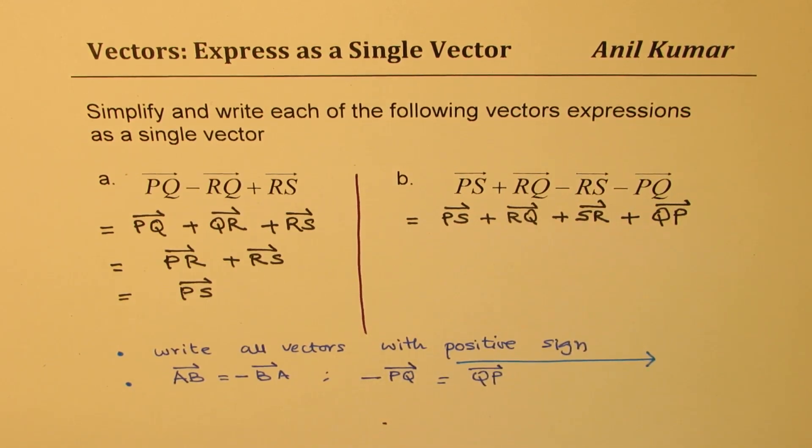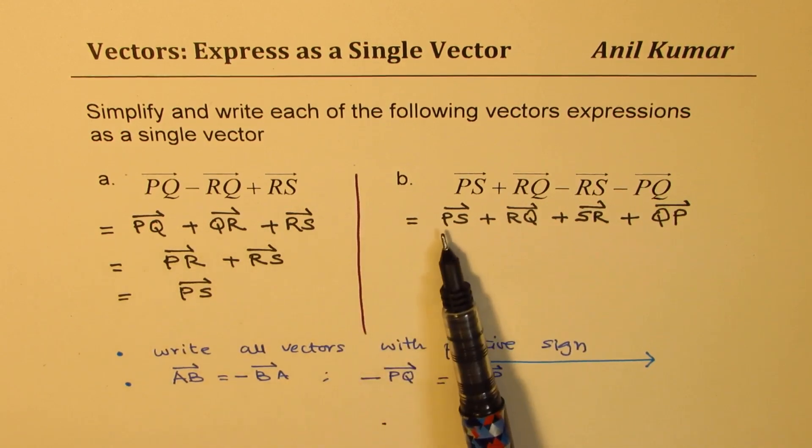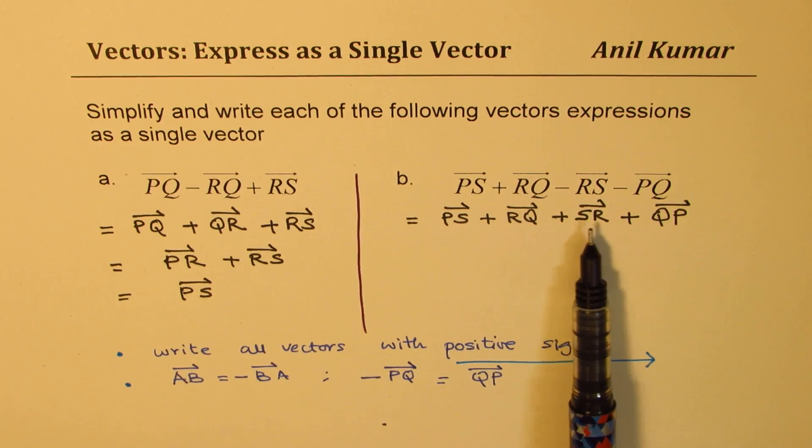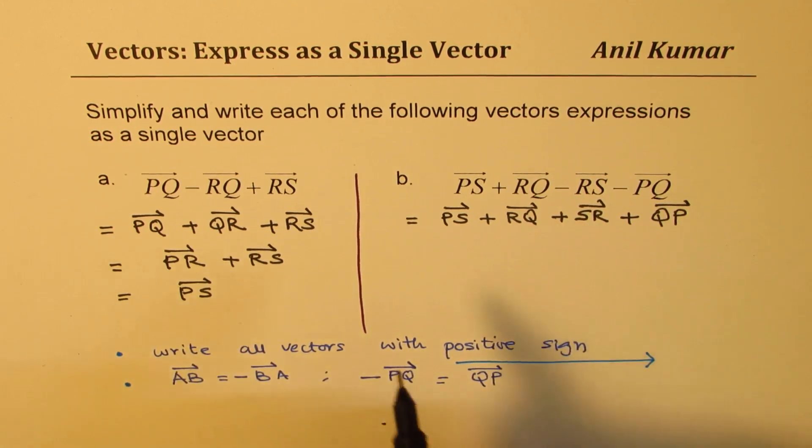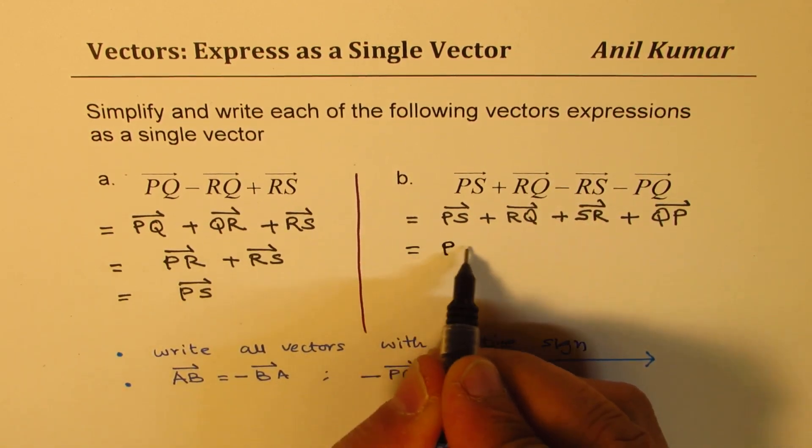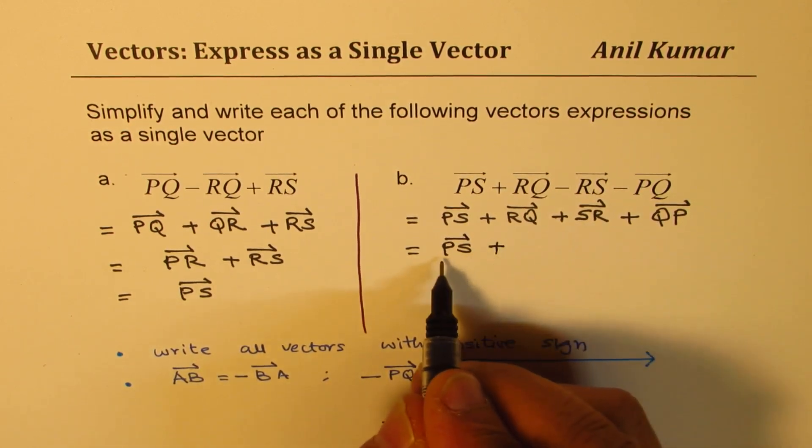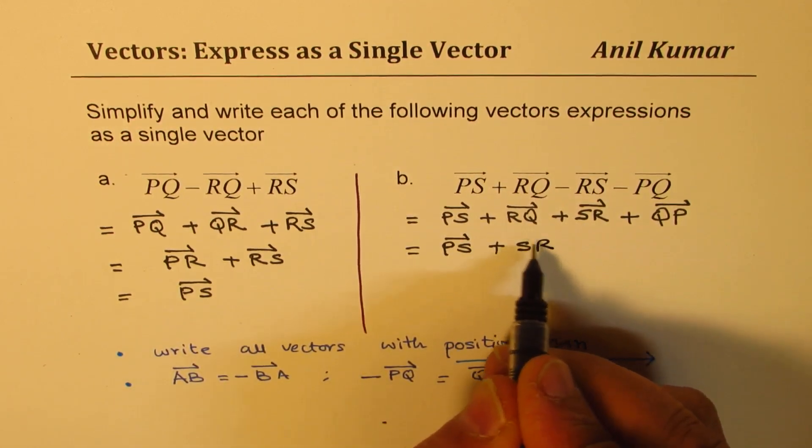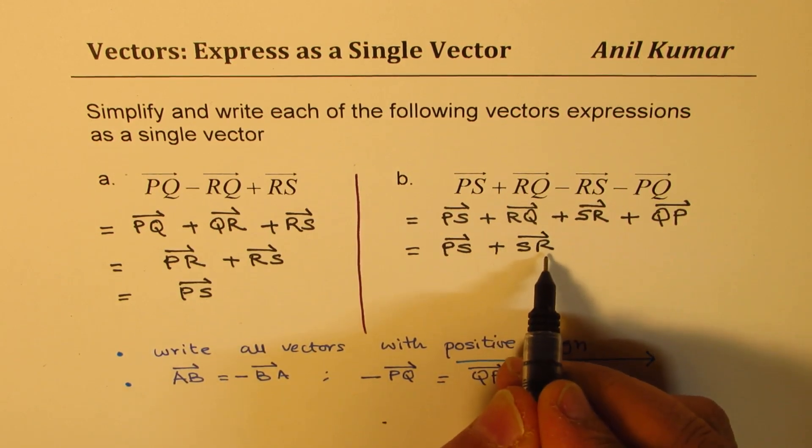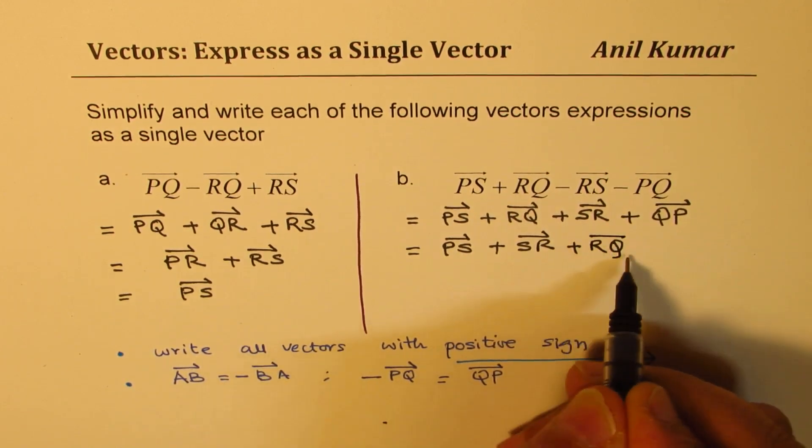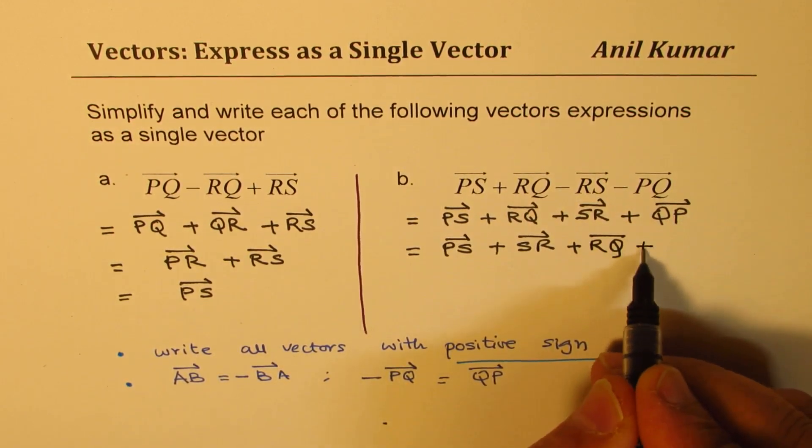Now, we have to make some kind of connection. We started with P, we are at S, now what? I'm looking that SR is there, so we'll rearrange. So we can write this as P to S and I'm bringing this SR first. So from S to R. And now I'm at R. From R, I can go to Q. So it's R to Q. Do you see how rearranging helps? And then Q to P.